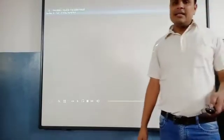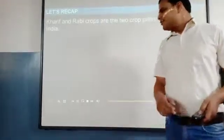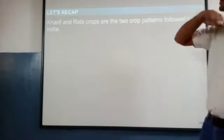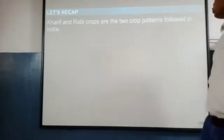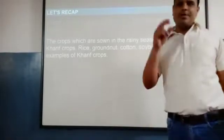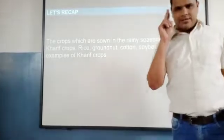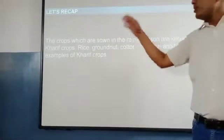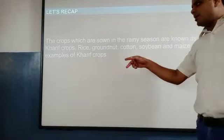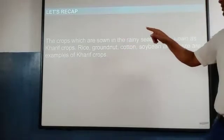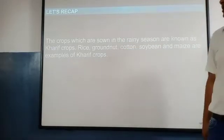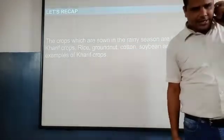Let us recap what we have learned today. Kharif and Rabi crops are the two major crop patterns followed in India. Crops grown in the rainy season are known as Kharif crops — examples include groundnut, rice, cotton, soybean, and maize.